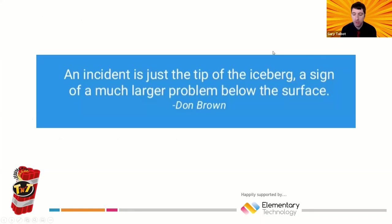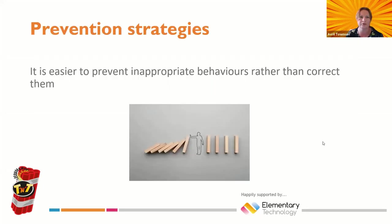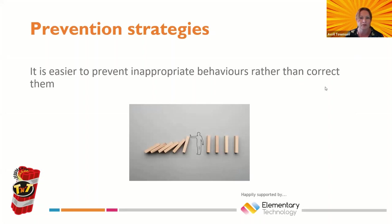We always like to start our webinars with a quote. I found this quote from Don Brown — I think he's a cyber security person — but I thought it was quite pertinent in terms of behaviour: as teachers, sometimes we just see the behaviour of the child without thinking or trying to dig deeper, because there must be a problem going on for that person to behave in that way. It's quite a nice quote to start with. I'm going to talk about prevention strategies to prevent inappropriate behaviours in classrooms — if we can prevent behaviours from happening, that makes our lives a lot easier rather than dealing with the aftermath.